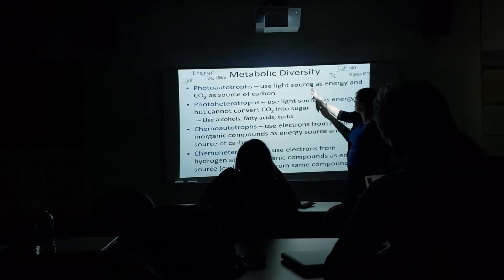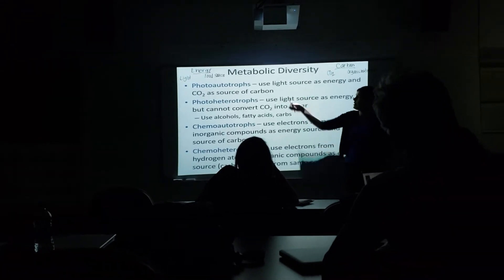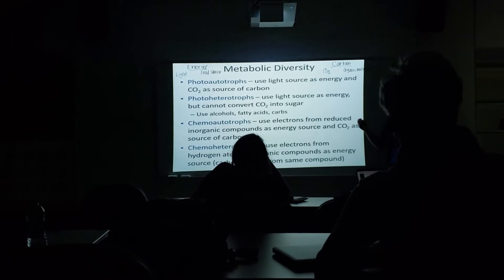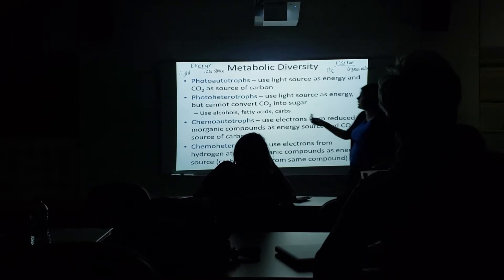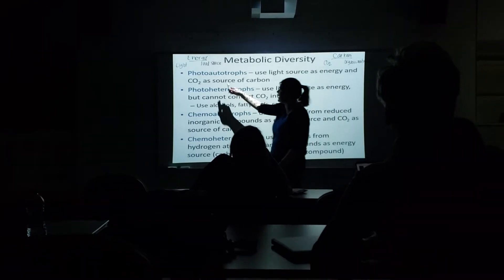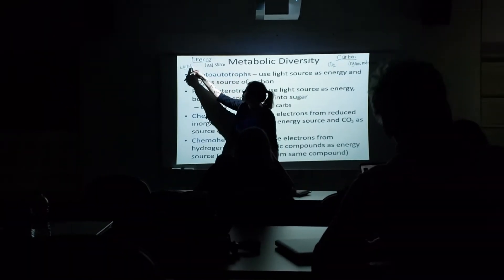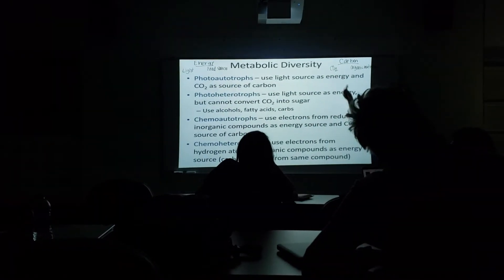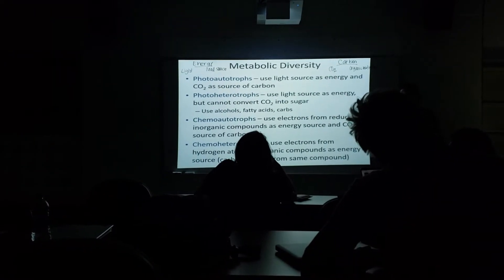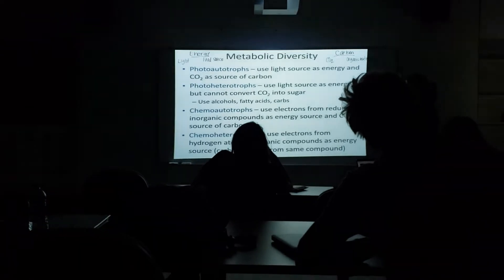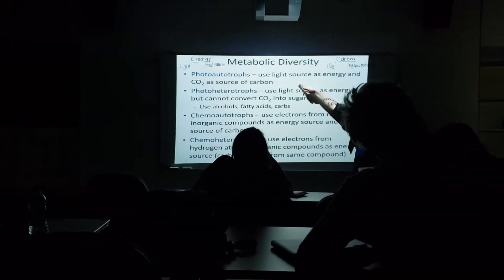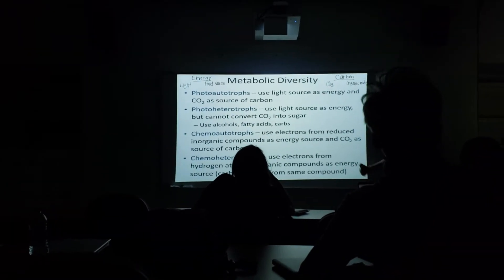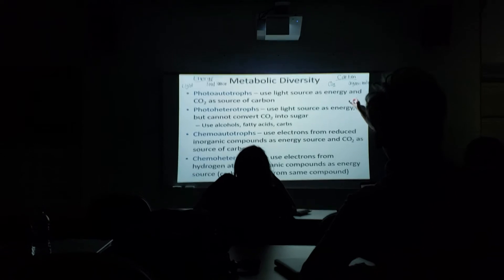If you use light for your energy and carbon dioxide for your carbon, you're a photo-autotroph. 'Photo' tells you you're getting energy from light, and 'autotroph' means you're using carbon dioxide. Can you think of anything that uses carbon dioxide to build stuff and uses energy from light? A plant. So plants are all photo-autotrophs.